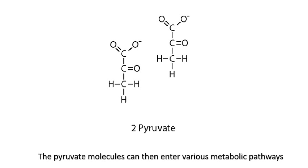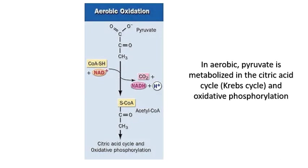These pyruvate molecules can later enter into various metabolic pathways depending on the cell's needs and the availability of oxygen. In aerobic conditions, where oxygen is required, pyruvate is further metabolized in the citric acid cycle or the Krebs cycle, which will be discussed in another video presentation, and oxidative phosphorylation, to produce more ATP.